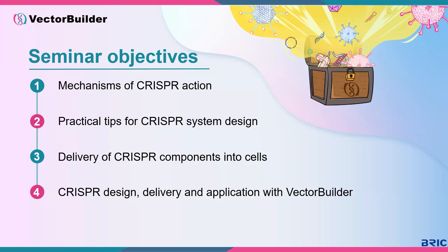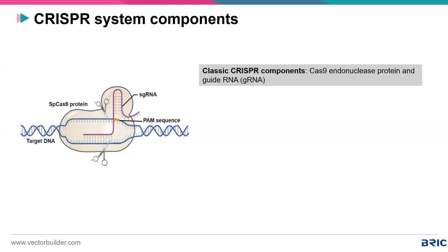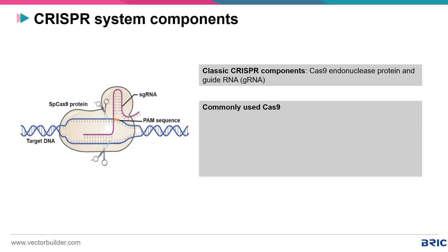Today we use CRISPR for gene knockdown, knock-up, gene regulation, and a whole bunch of other applications. The classical CRISPR-Cas9 contains two main components. One is the Cas9 endonuclease — it's a protein, an enzyme, an RNA-guided DNA nuclease. The second component is a guide RNA. The guide RNA guides the Cas9 protein to the target sequence to induce double-stranded breaks. As the technology has emerged, a lot of modifications and advancements have come to the field in terms of Cas9.